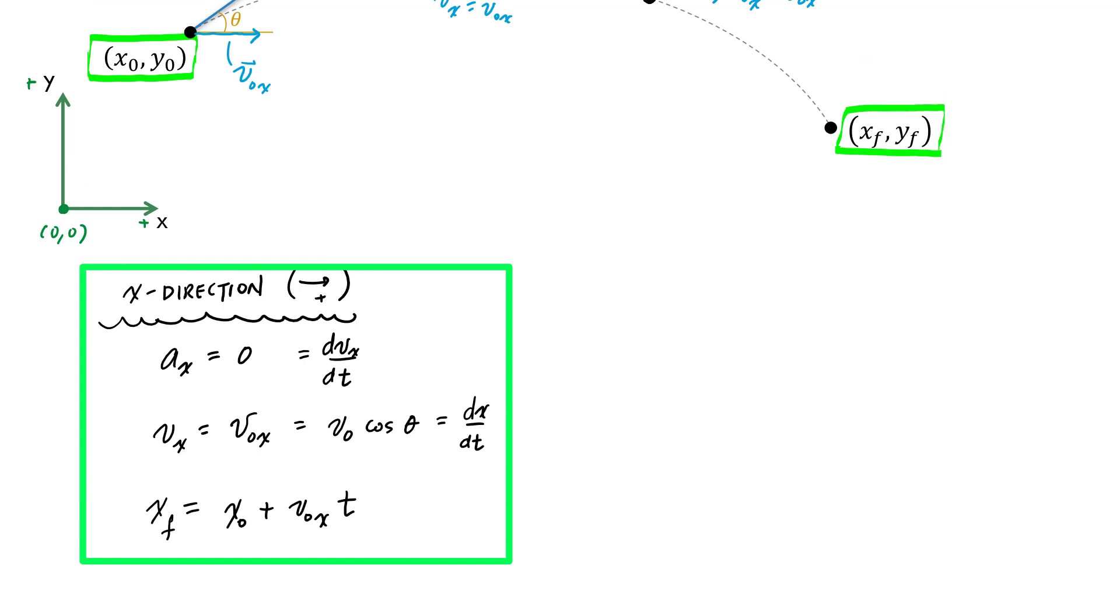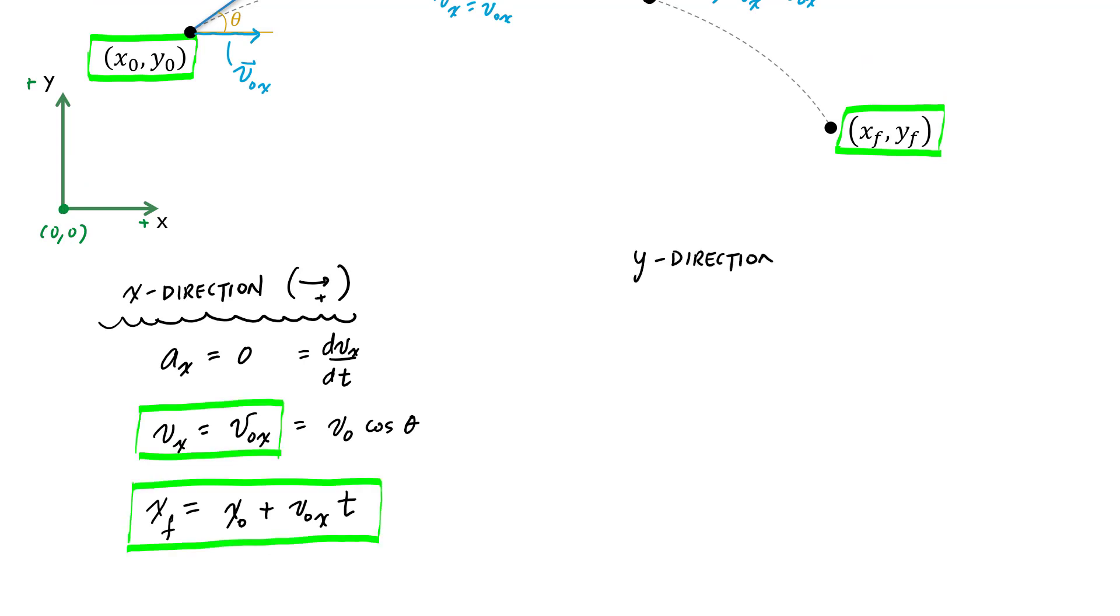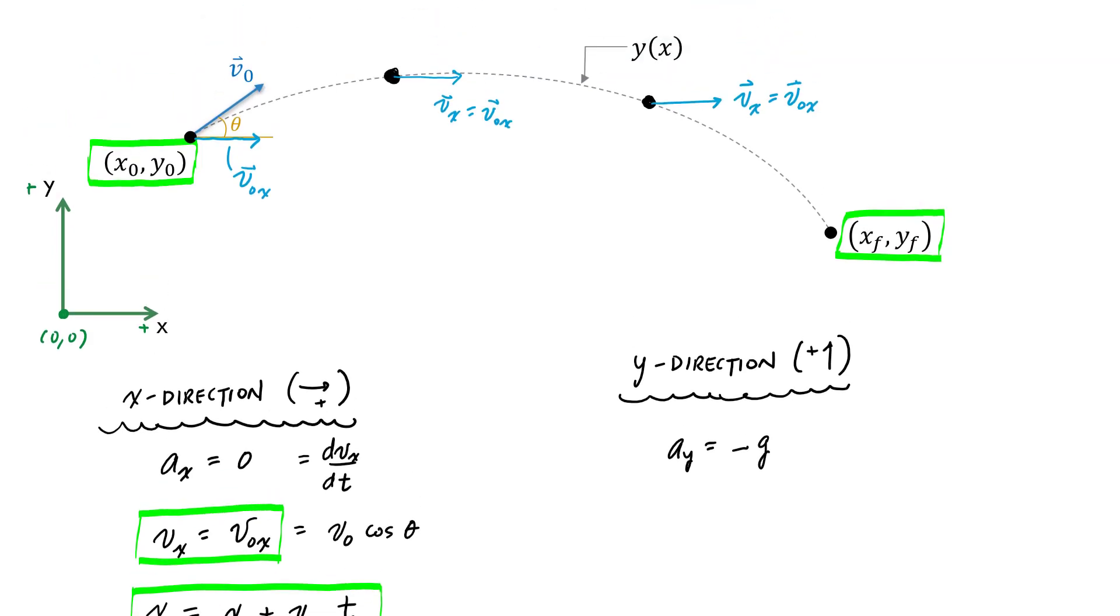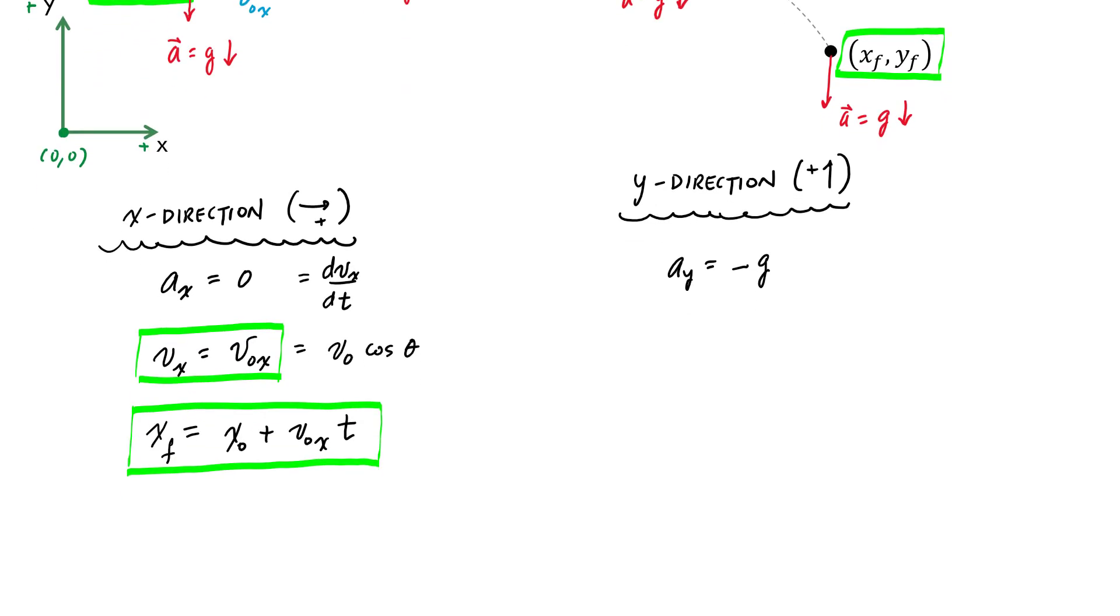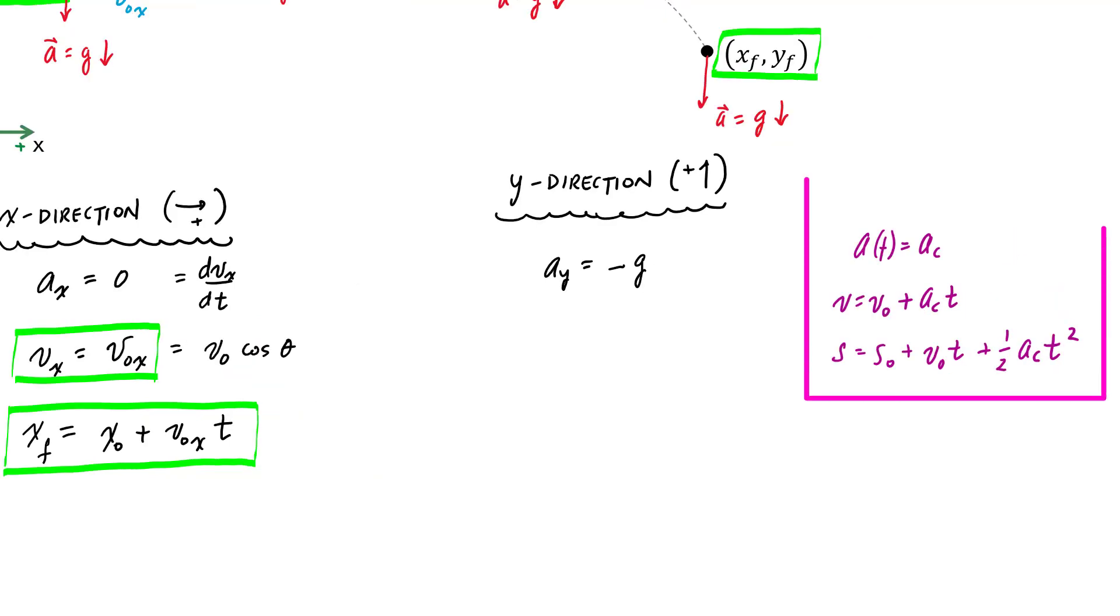In the Y direction, I've defined positive as pointing upwards, and I have a case of constant acceleration. That acceleration is due to gravity, which is pointing down, negative G. No matter where my particle is along the path of the projectile, the only acceleration is the acceleration due to gravity. This A has magnitude G pointing downwards, and that's true everywhere. It's useful to remember our constant acceleration equations. In the Y direction, because of negative G, all I've got to do is replace AC for negative G.